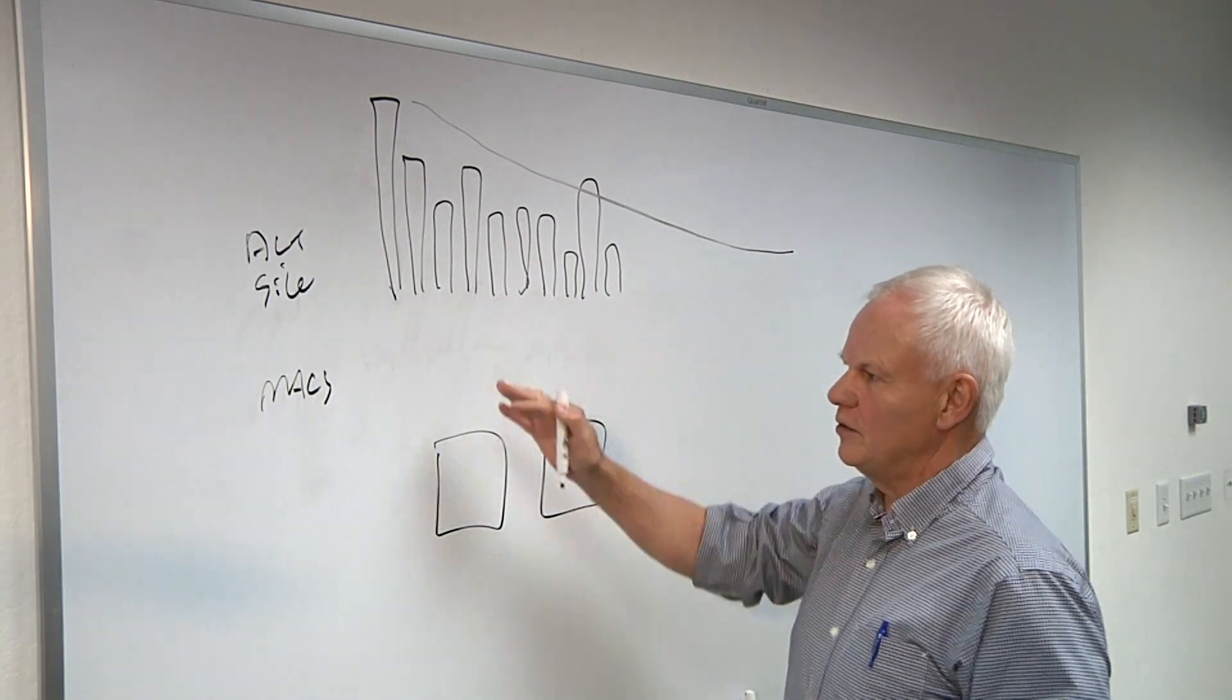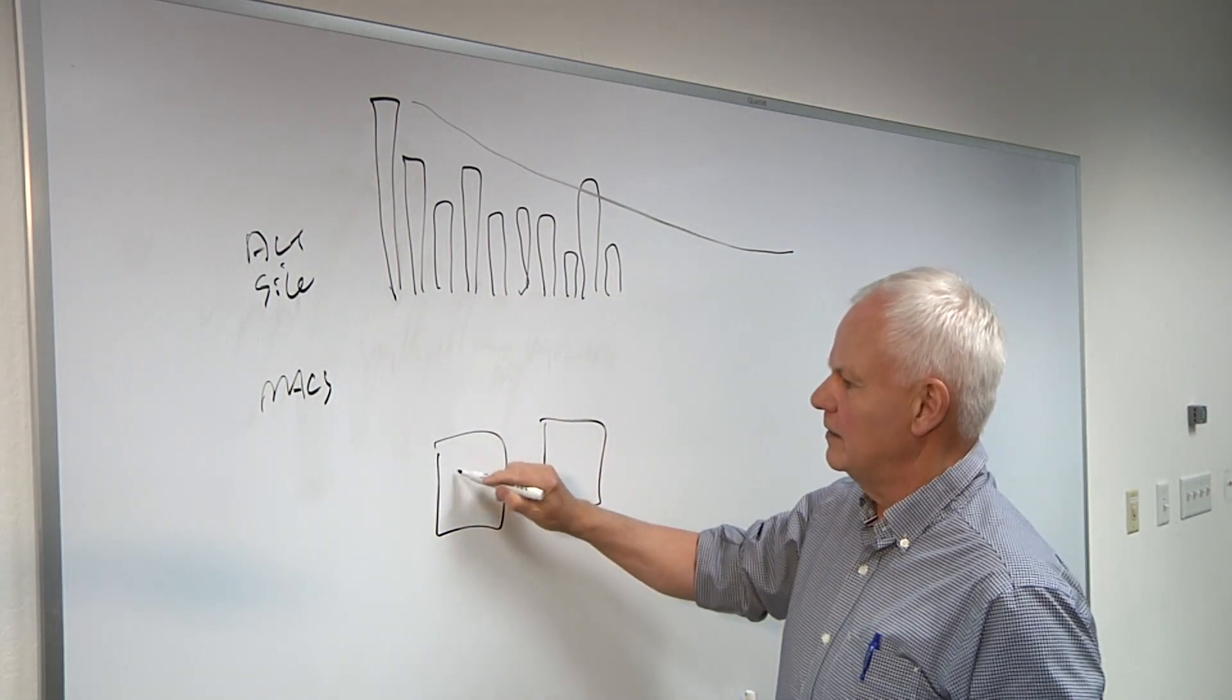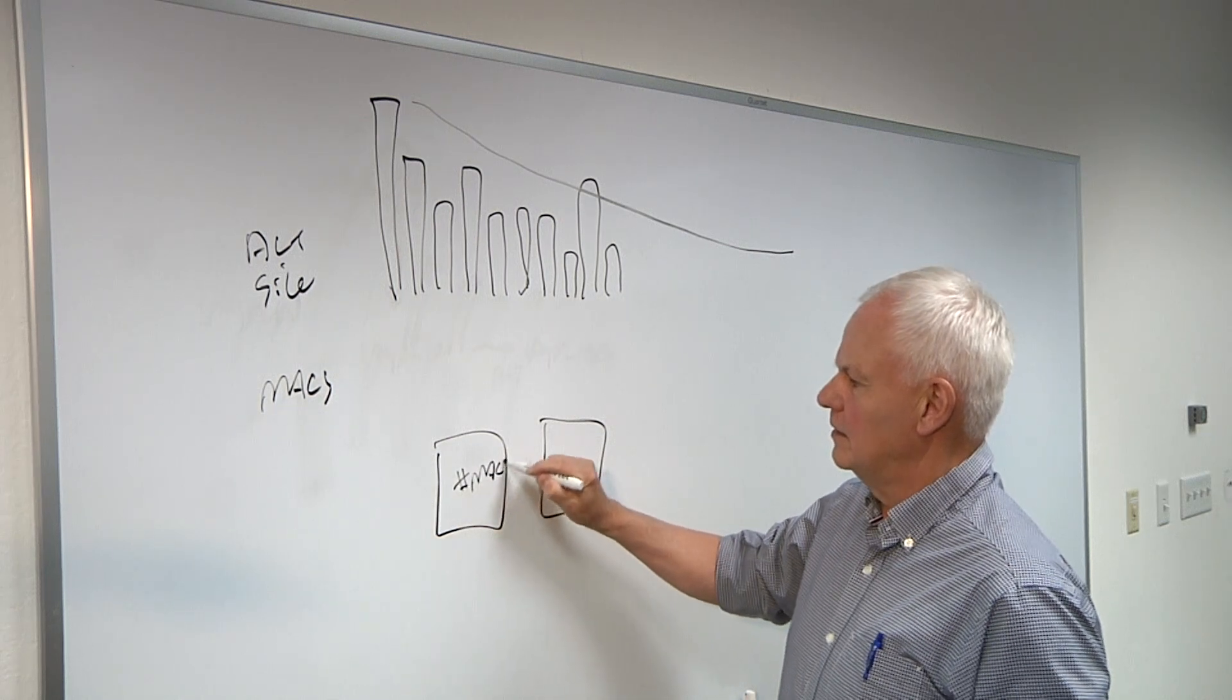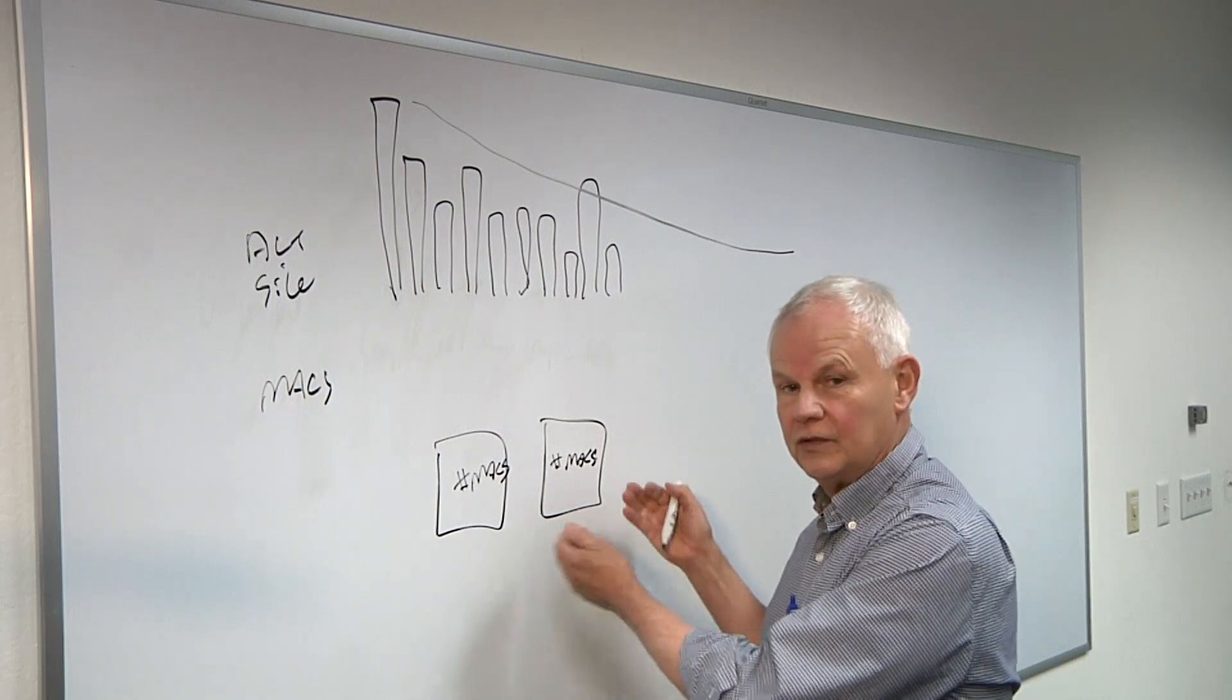So how you split the model between the two chips is important. You want to look for two things. One is you want to have the number of max in this chip be roughly equal to the number of max in this chip in terms of the distribution of workload.